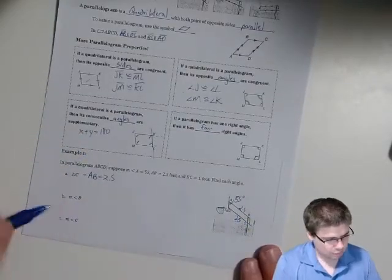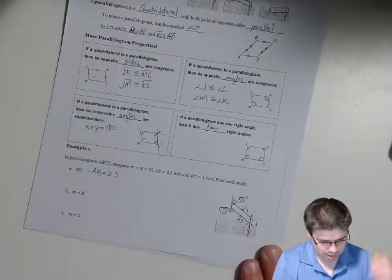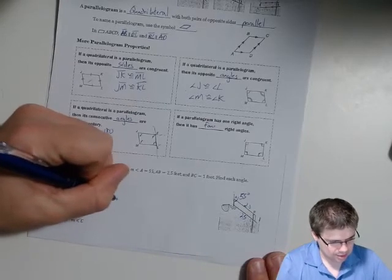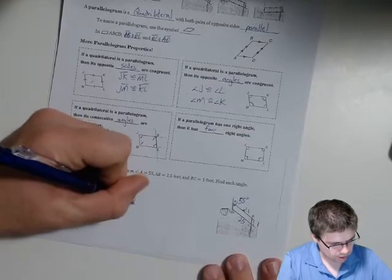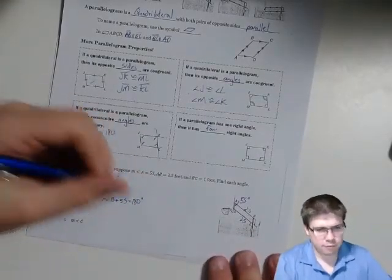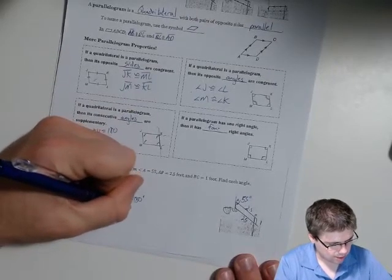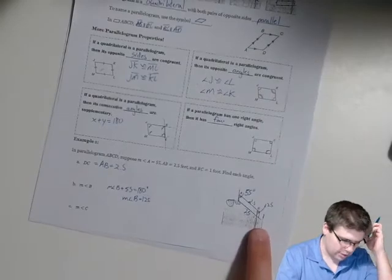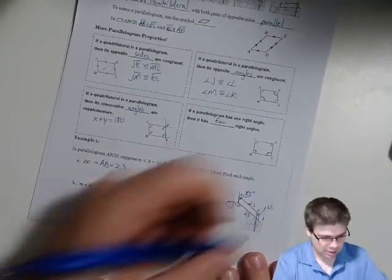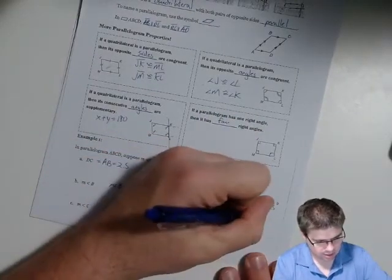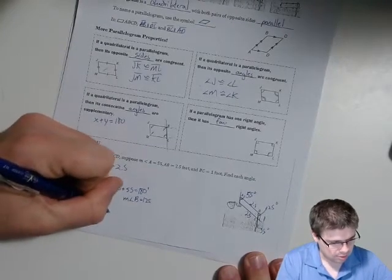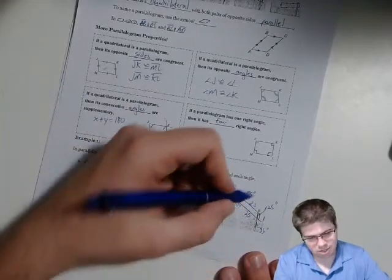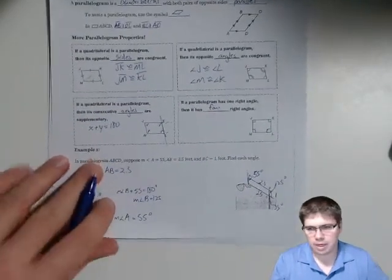The measure of angle B — we know that's a consecutive angle in a parallelogram, so they're supplementary. The measure of angle B plus 55 equals 180 degrees, so we subtract 55 from 180 and get 125. The measure of angle B is 125. Then the measure of angle C is the same as 55 degrees, equal to the measure of angle A. The side up here is also one foot.